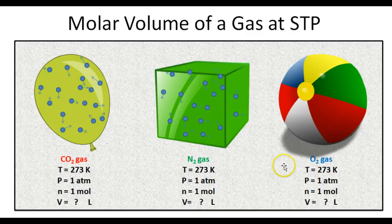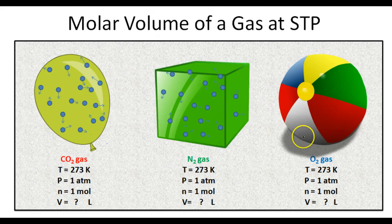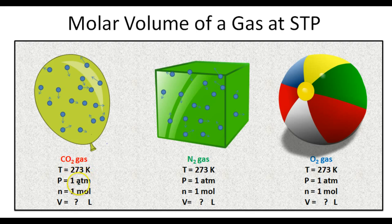Let's suppose I have three gases. One of those gases is carbon dioxide gas in the balloon you see. One of those gases is nitrogen gas in this cube right here. And one of the gases is oxygen gas that fills up this beach ball here. Furthermore, each one of these gases is at a temperature of 273 K and a pressure of one atmosphere — that is to say, each one of these gases is at STP, standard temperature and pressure.